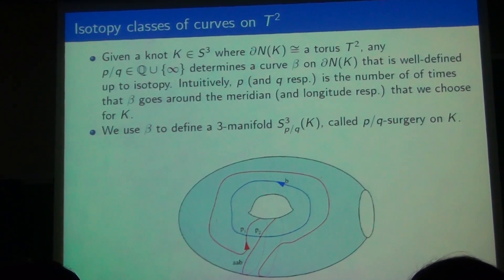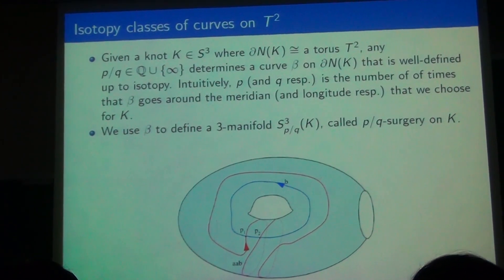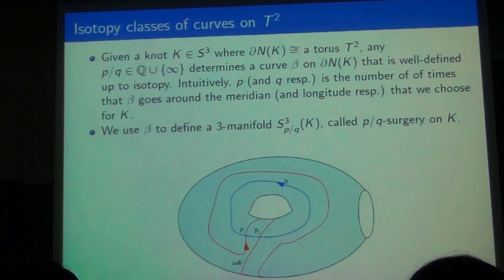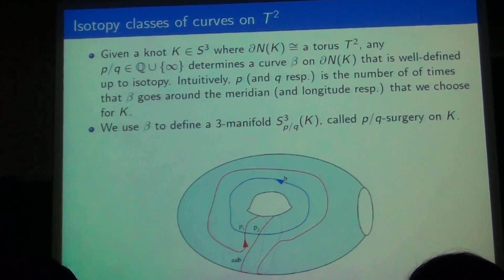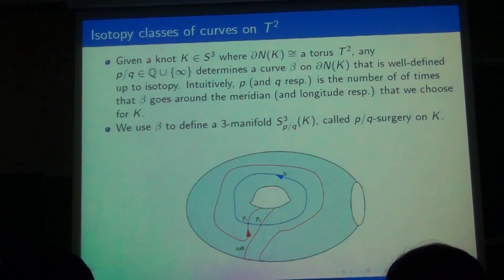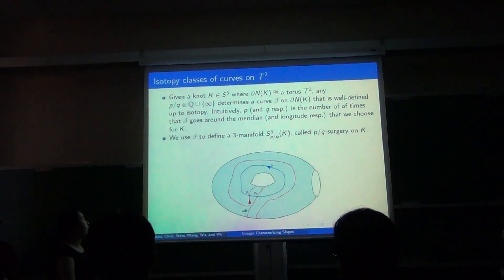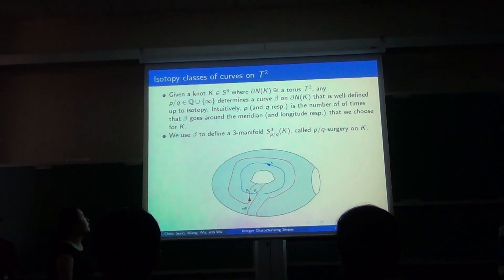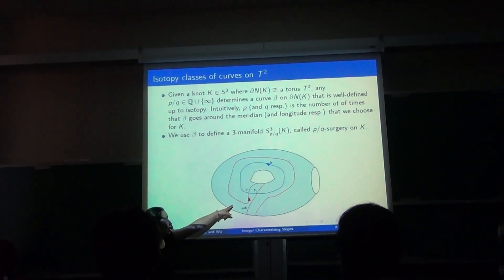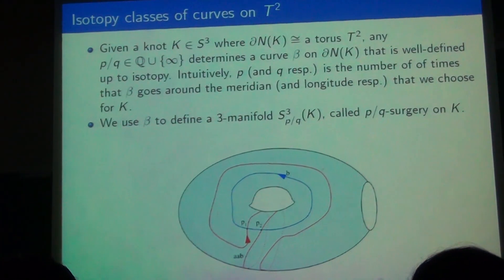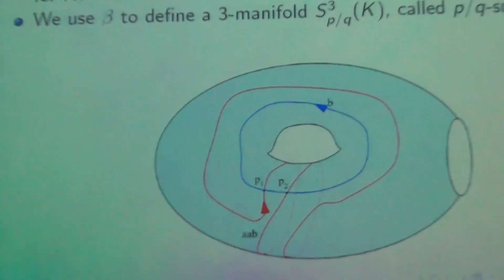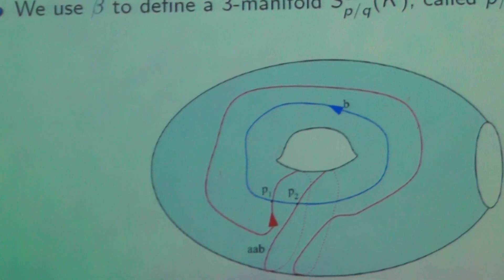And the isotopy classes of curves in a torus is in bijective correspondence with a set of extended rational numbers. So given N_K in S³, where the boundary of a neighborhood of K is a torus, then any extended rational number p over q determines a curve β on the boundary of the neighborhood of K that is well-defined. Intuitively, you can see the example of two curves here, that p is the number of times β goes around the meridian, and q is the number of times β goes around the longitude respectively.